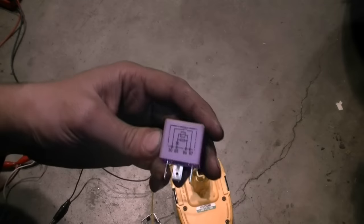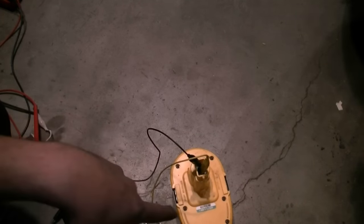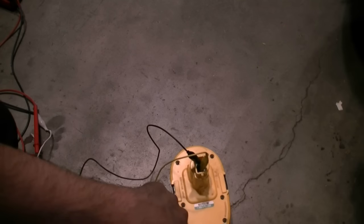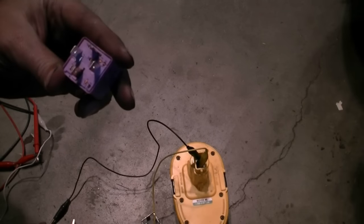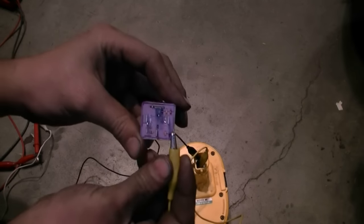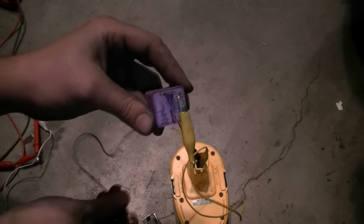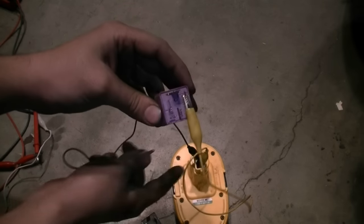In order to check to see if your relay is working you basically want to get a power supply source of 12 volts. You can use your car battery or I'm going to use this battery from my wireless drill. You want to connect one side to 85 and the other side to 86 and you're going to hear it click.